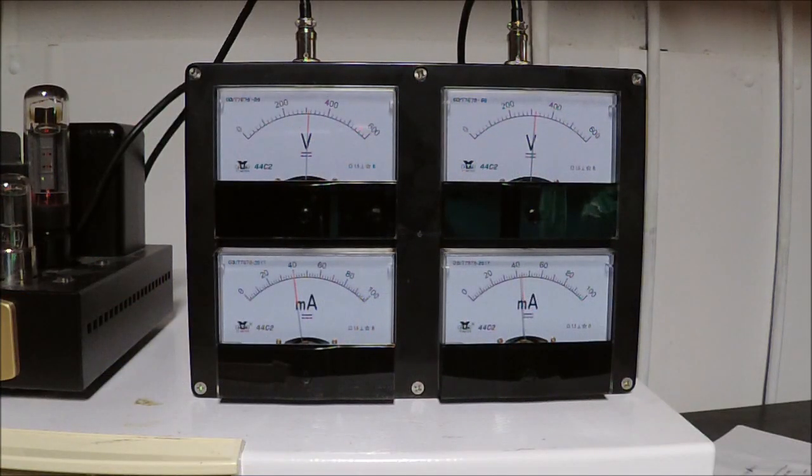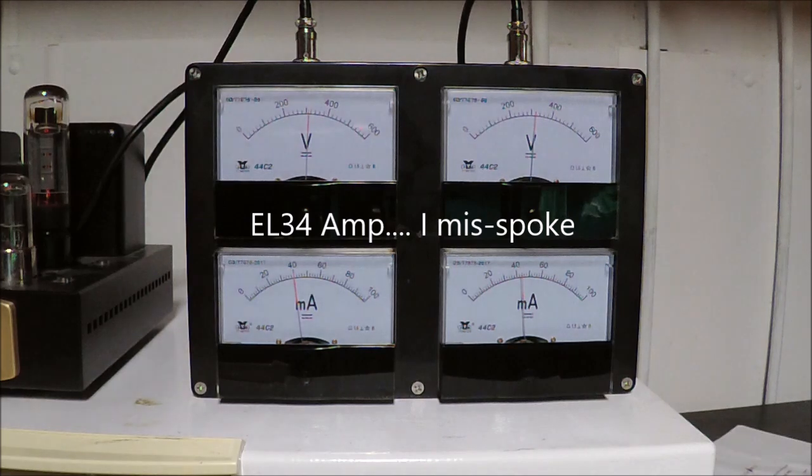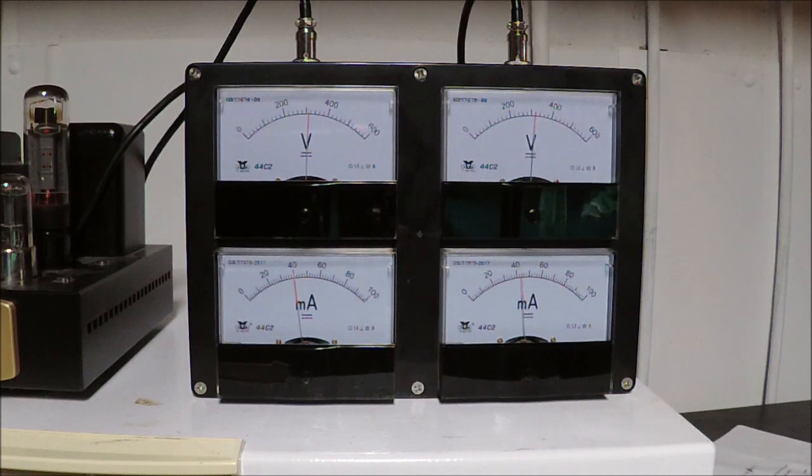In this case our EL84 amplifier, our hi-fi amp here, we're pulling approximately 315-320 volts and about 40 and 41-2 milliamps respectively. That's pretty conservative and that's easy to calculate and see how those tubes are doing with those numbers.